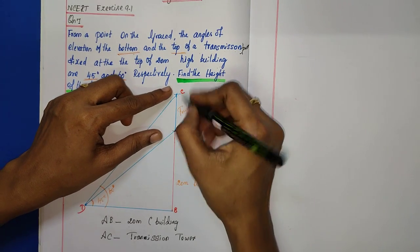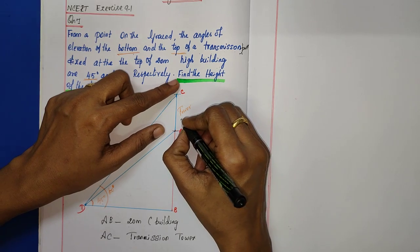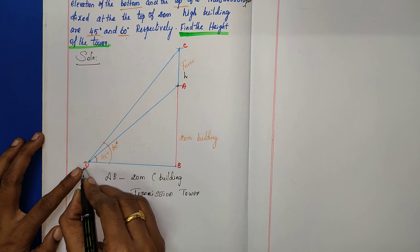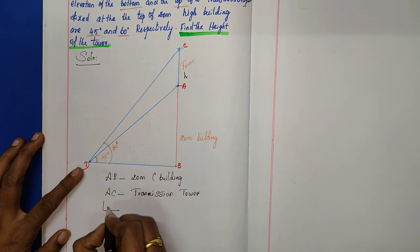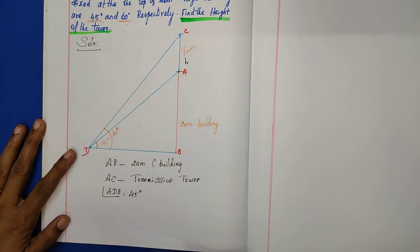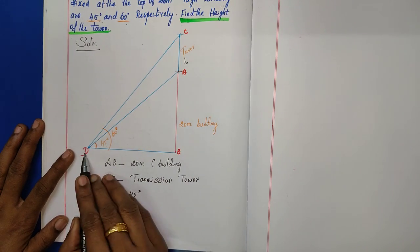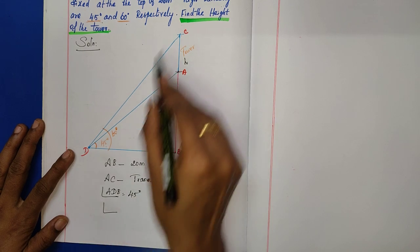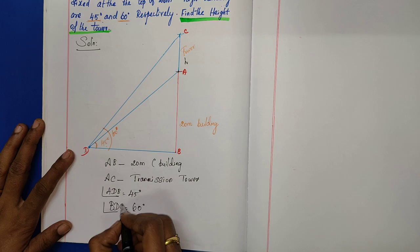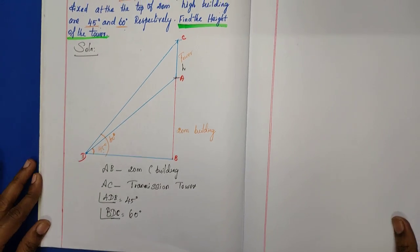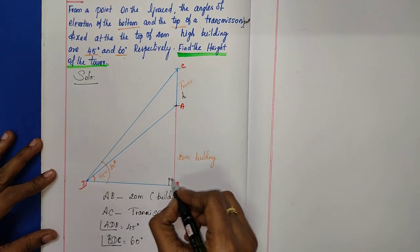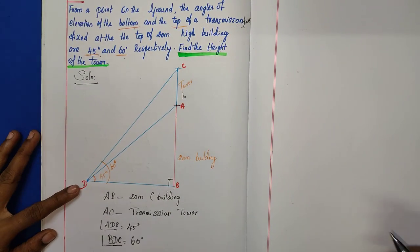Let the height of the tower AC equal h. The angle ADB equals 45 degrees and the angle BDC equals 60 degrees. We will now solve using the right angle triangle ADB.